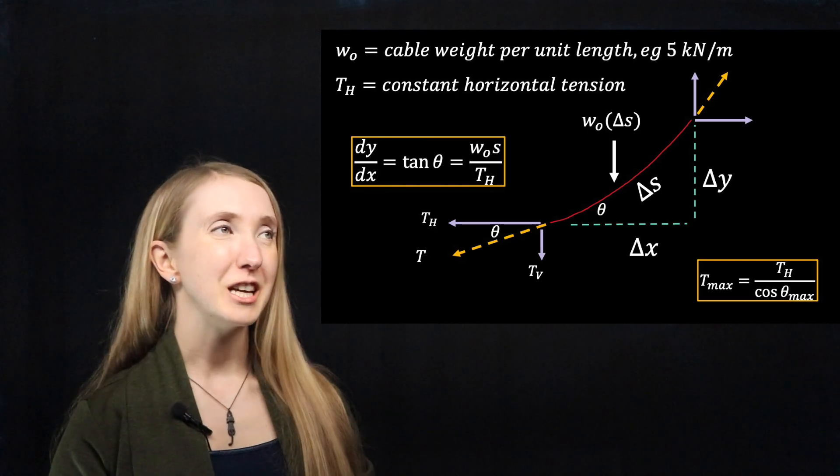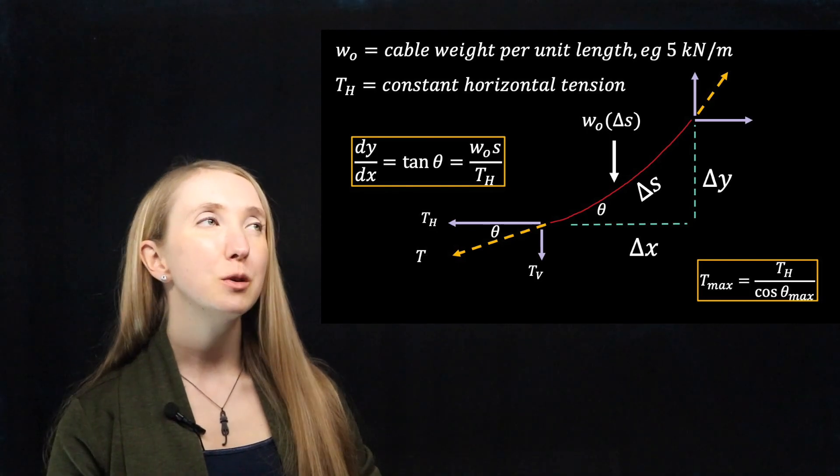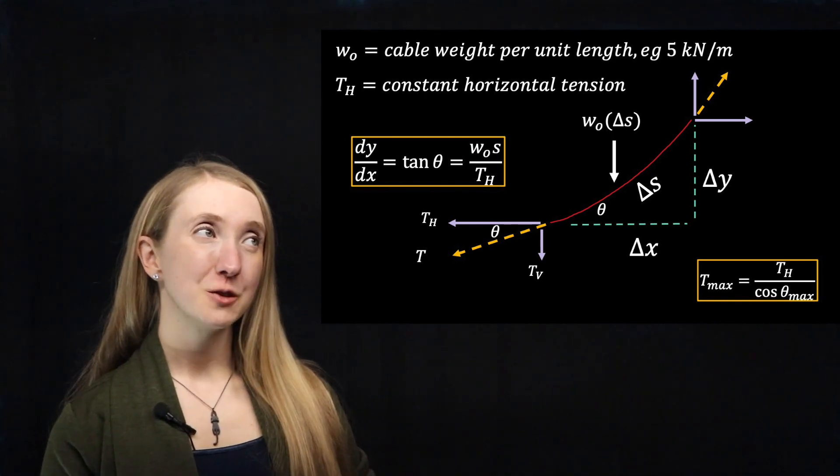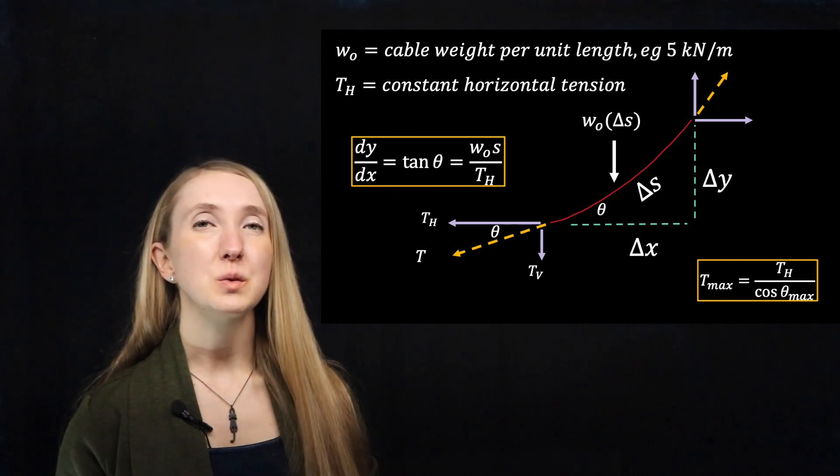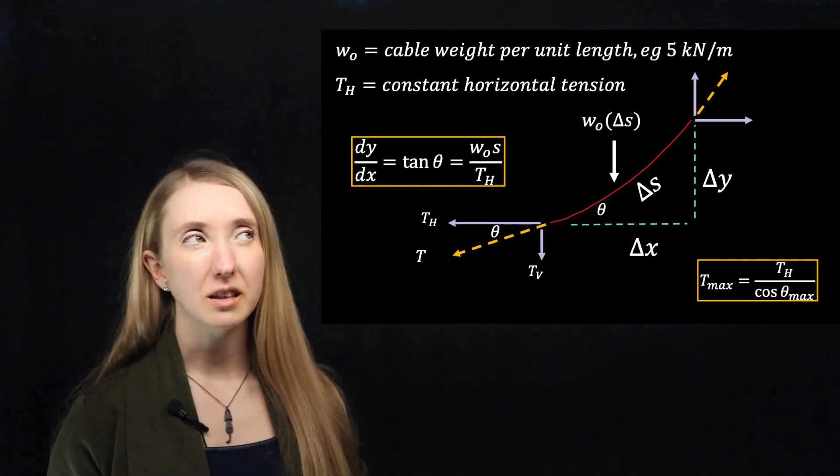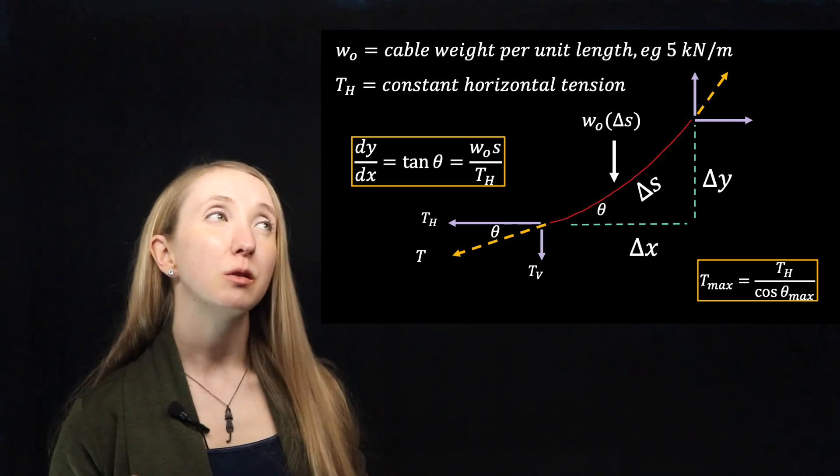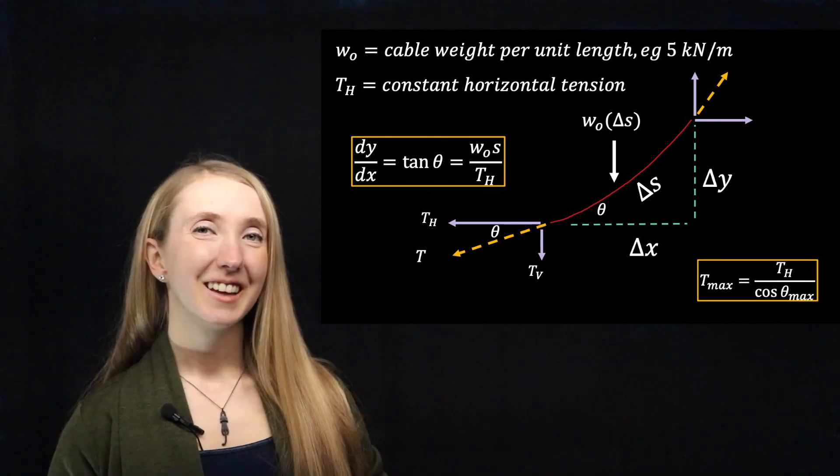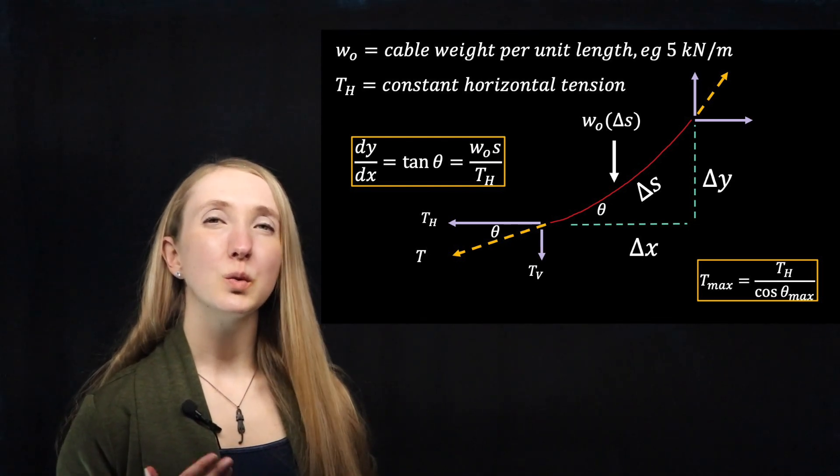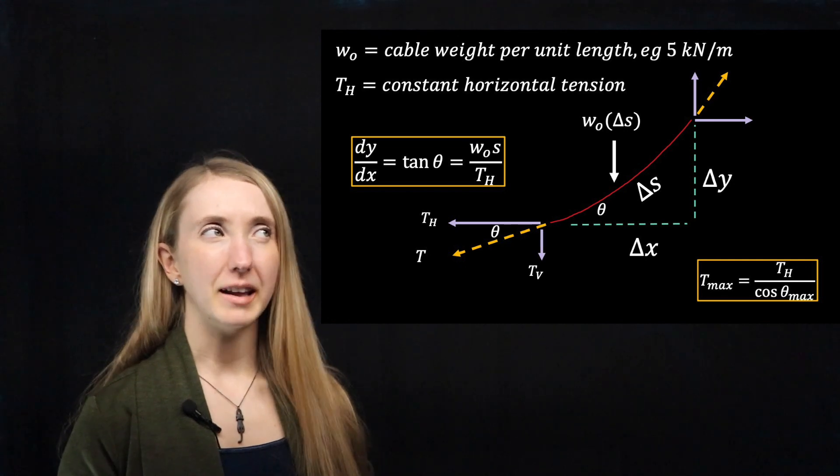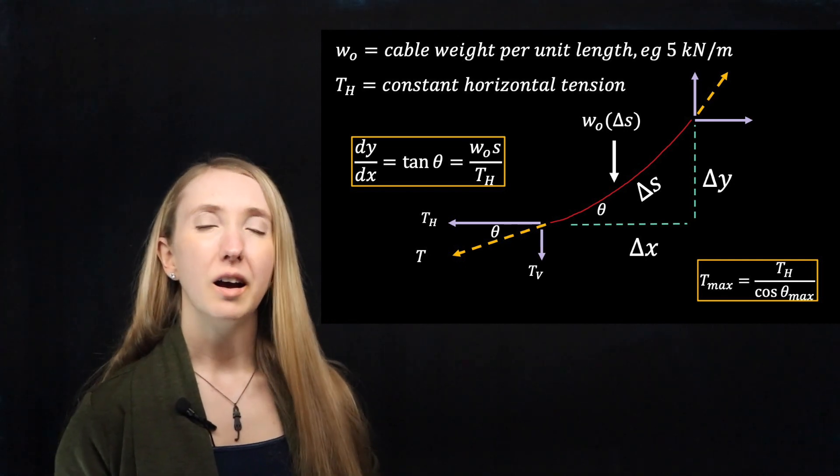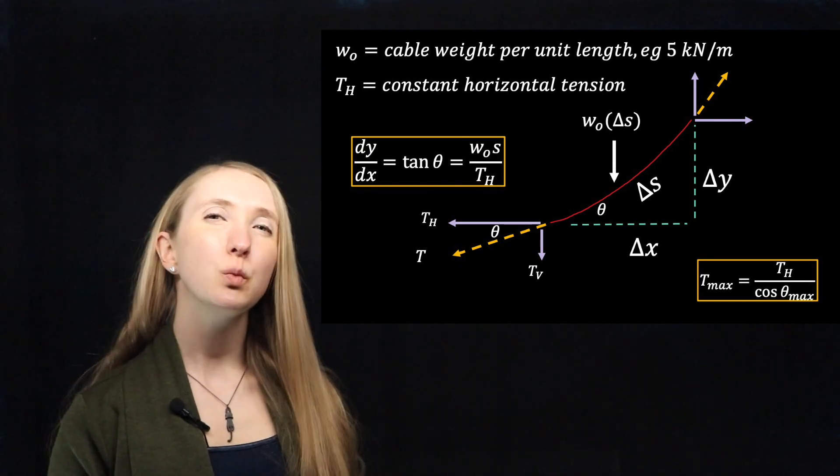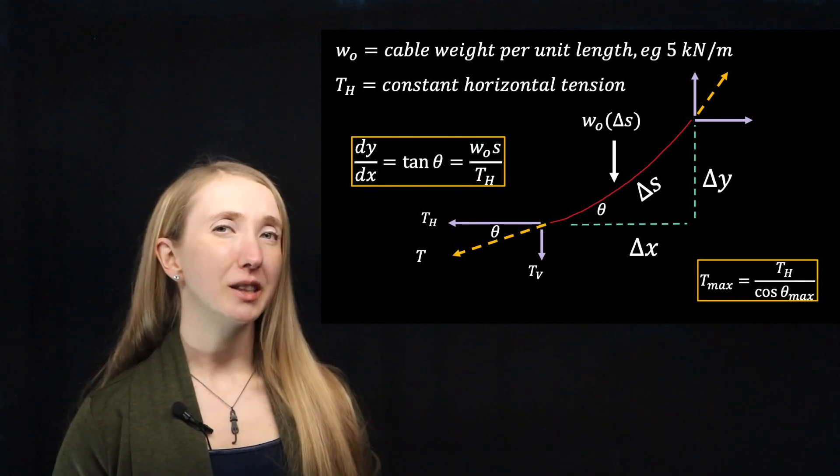Here's our first relationship. With some fancy math, we would find that tan theta is equal to W naught s over T_H. Since tan theta is equal to the opposite over adjacent, we would expect it to be equal to the vertical force component divided by our horizontal force component. So even without the fancy math, we can buy into this relationship.